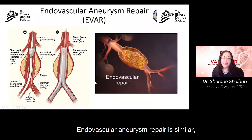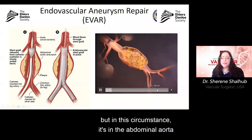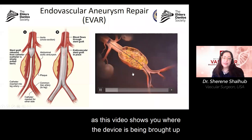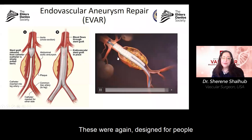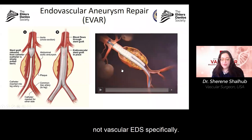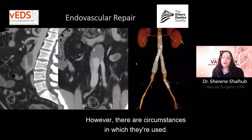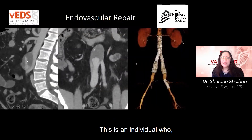Endovascular aneurysm repair — EVAR — is similar but in the abdominal aorta, as shown in this video where the device is brought up and deployed to line the aorta. These devices were designed for people with atherosclerotic disease, not vascular EDS specifically. However, there are circumstances in which they are used.